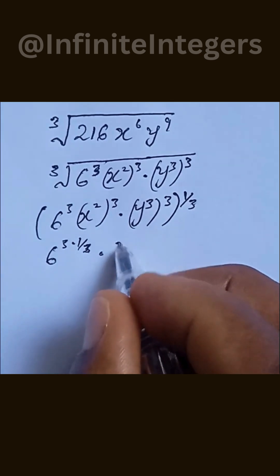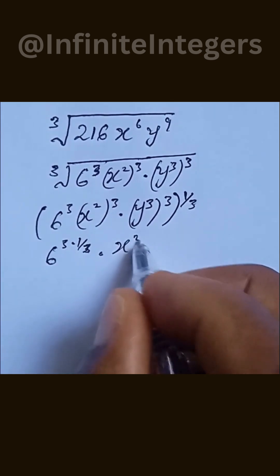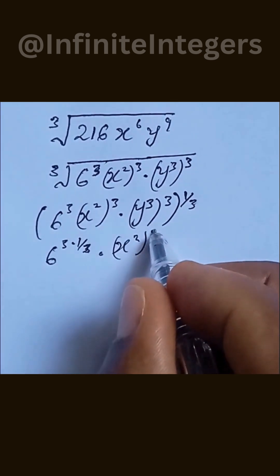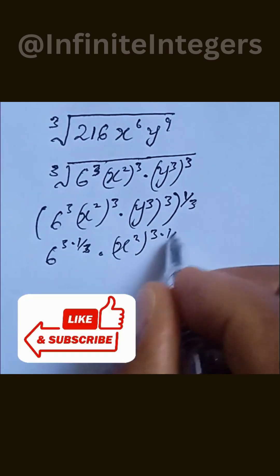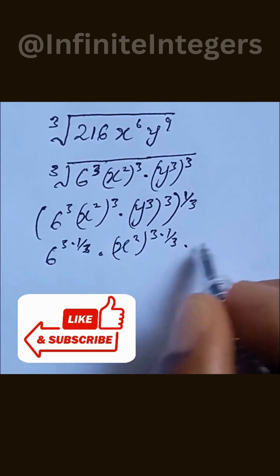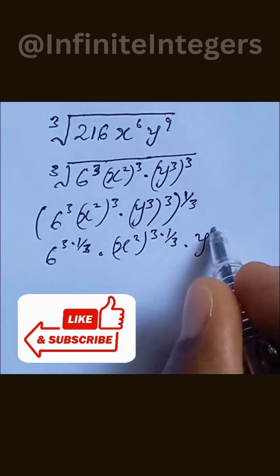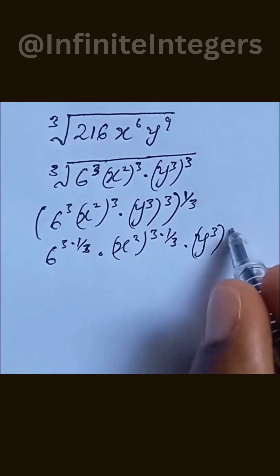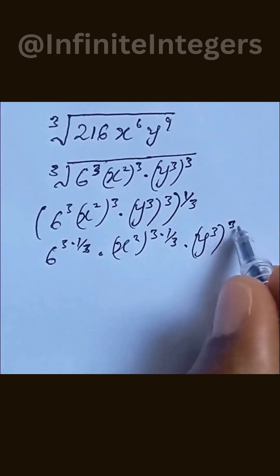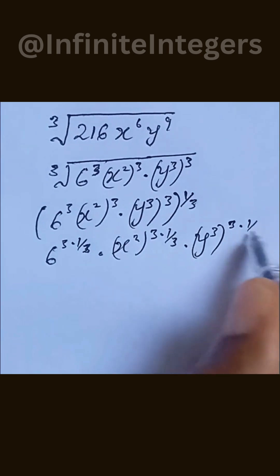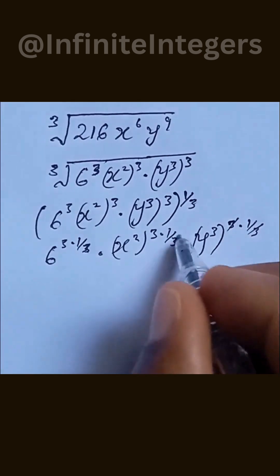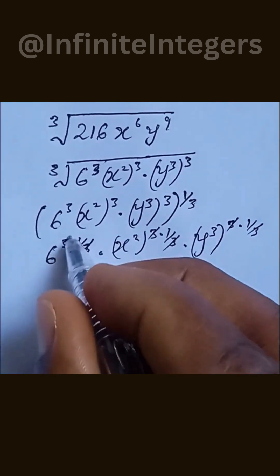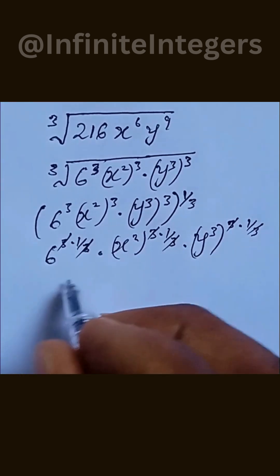Multiplied by x to the power of 2, then the bracket to the power of 3 multiplied by 1 over 3, then y to the power of 3 multiplied by 3, then multiplied by 1 over 3. This cancels out, and this cancels out, and this cancels out.